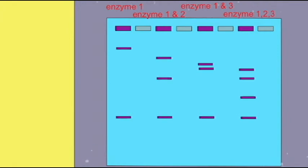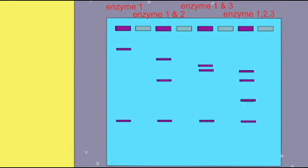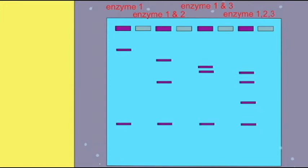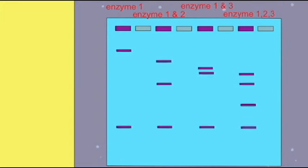So enzyme 3 makes one additional cut. Its cut is closer to the middle of that original yellow piece because those two bands are closer in size.